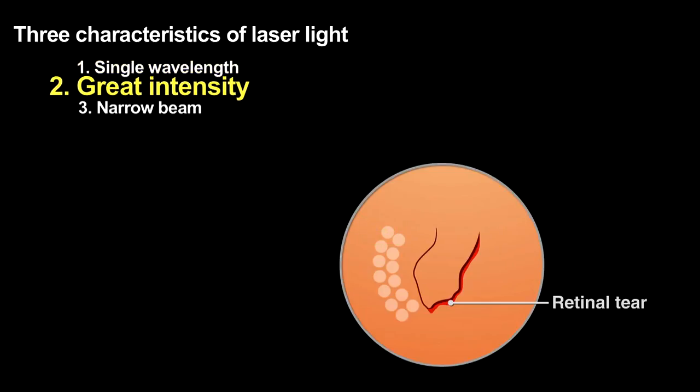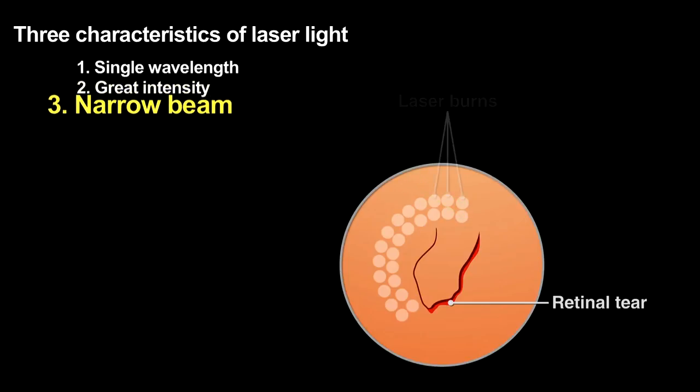The laser beam then strikes the retina where the tissue strongly absorbs that light, using the high-intensity light to weld the detached retina back into place. The beam's narrowness allows the surgeon to affect only the area of the retina that needs to be repaired, areas as small as 30 microns.